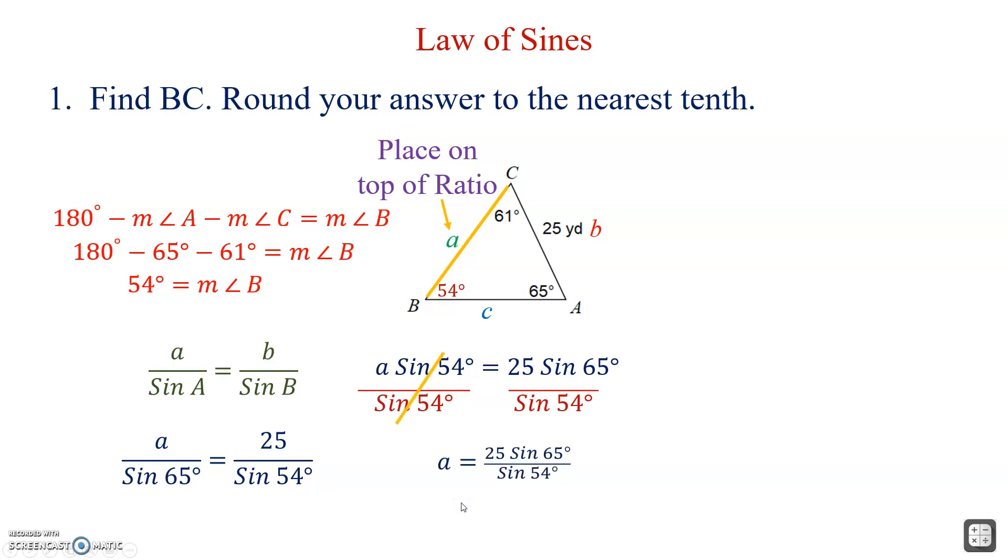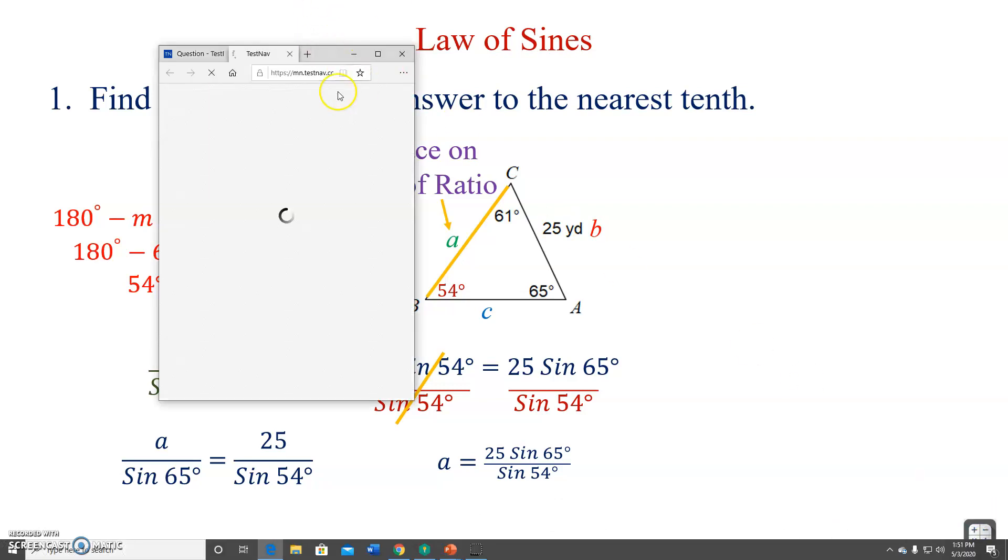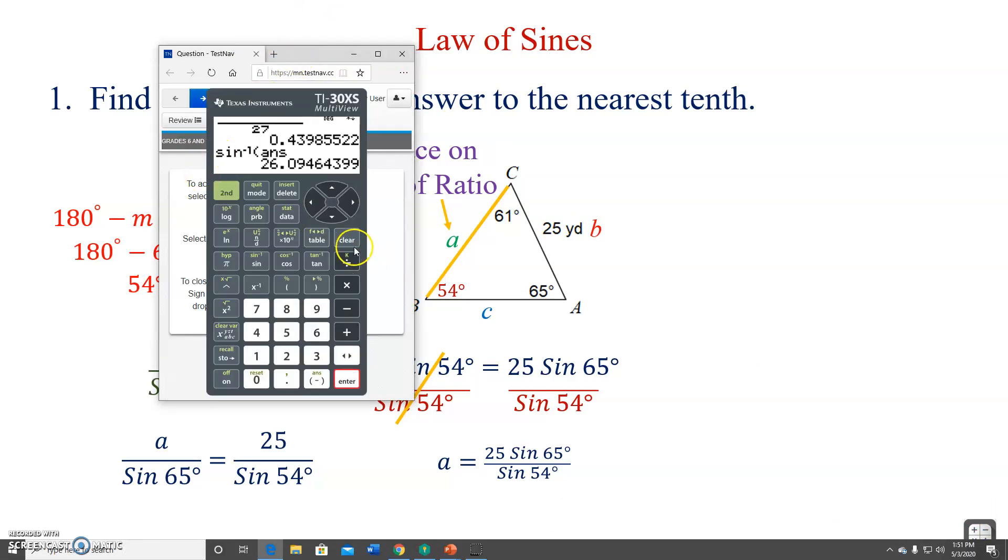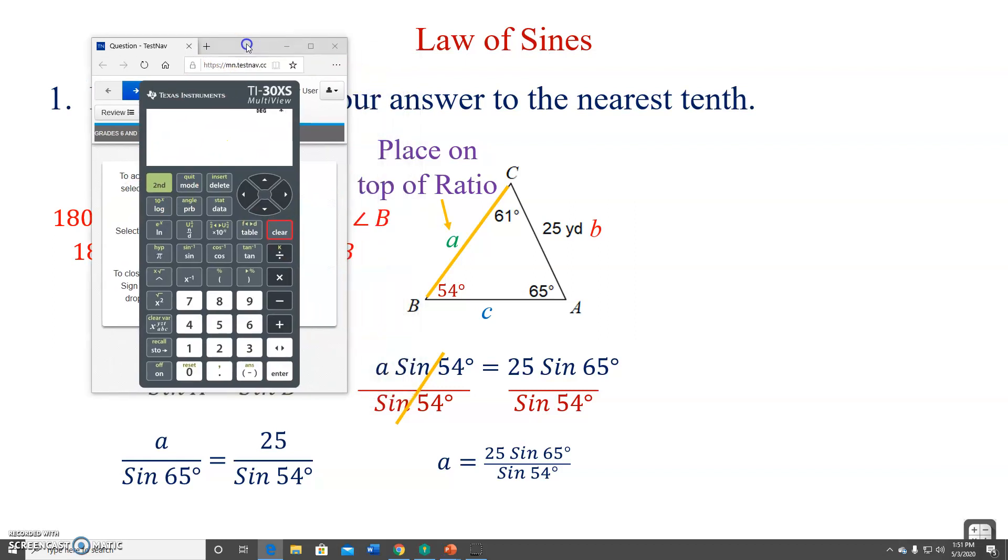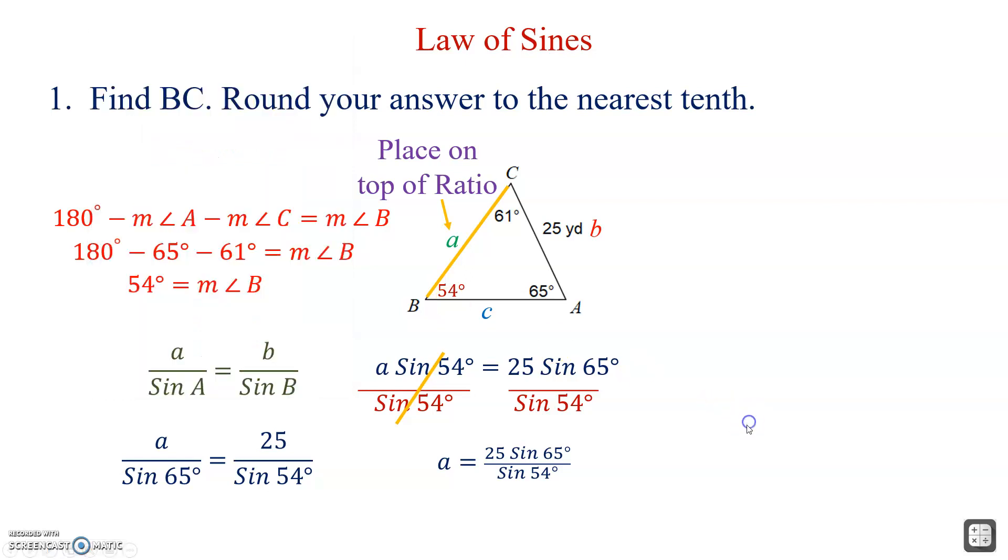What I'll go into the calculator is 25 sine 65 over sine 54. Let's see what we get here. Let me clear this up. 25 sine 65 over sine 54. We get a little over 28, so basically 28. BC is approximately 28.0 because we are rounding to the nearest tenth.